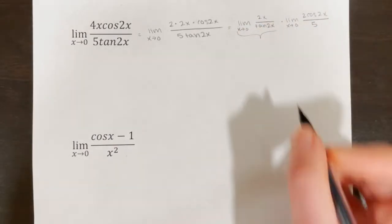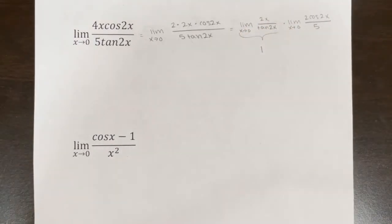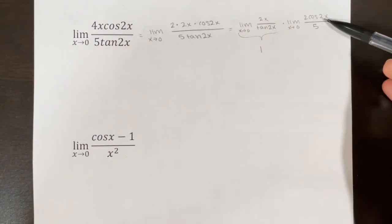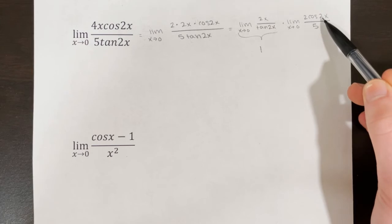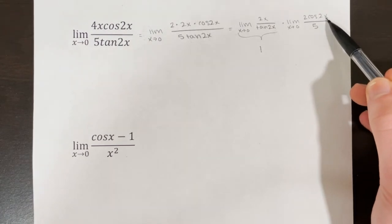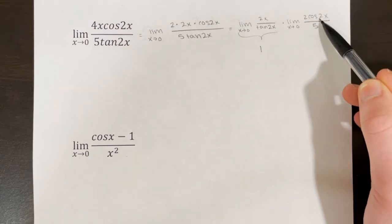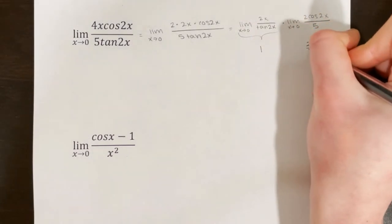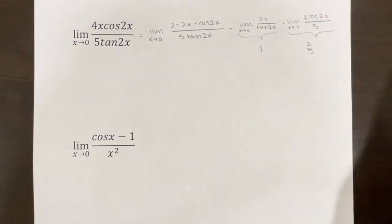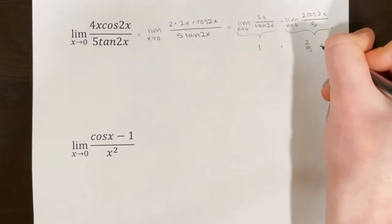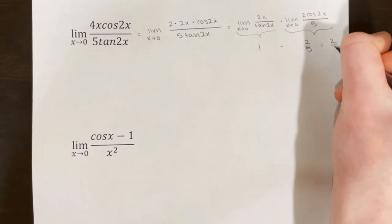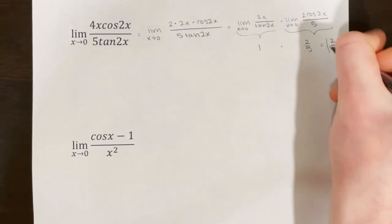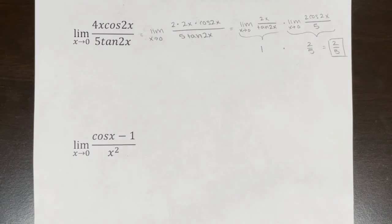I know that 2x over tan(2x) produces 1. Now I'm going to use direct substitution for the second limit. Cosine of 2x with x equal to 0 gives cosine of 0, which is 1. So 2 times 1 is 2, and this is 2 fifths. That means my overall answer is 1 times 2 fifths, which is 2 fifths.